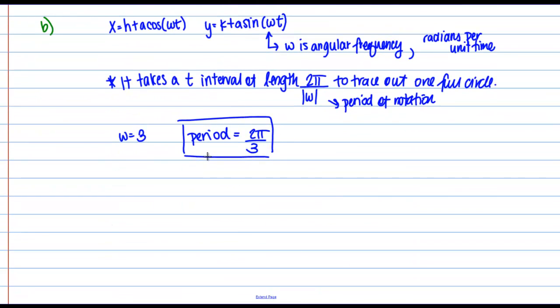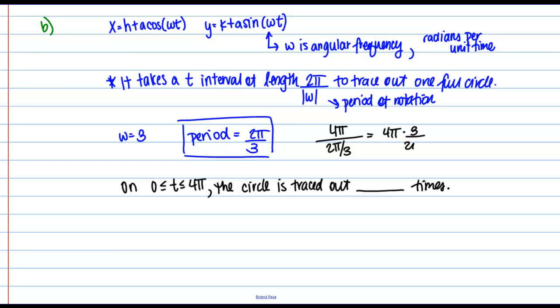Now if we wanted to, we could from this information figure out how many times the circle is traced out on our interval from 0 to 4π. And to do that, we'd simply take 4π and just divide it by 2π over 3. So here that gives me 4π times 3 over 2π. So it looks like we just get 2 times 3, or 6 times. So the circle is traced out 6 times on the T interval from 0 to 4π.